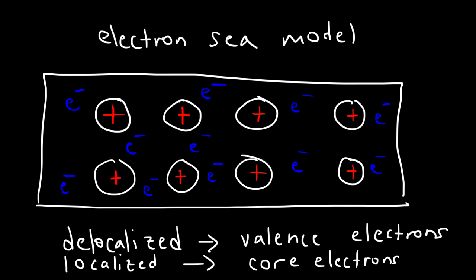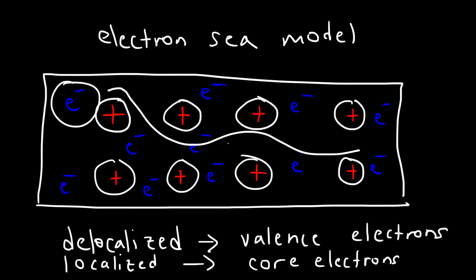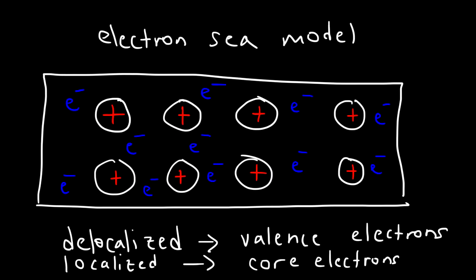A delocalized electron, or a valence electron, is free to move — not stuck to one particular local environment, not stuck to one atom. So this electron can move and be shared among many atoms, so it's delocalized. The valence electrons are delocalized and free to move, while the core electrons are localized and not free to move.